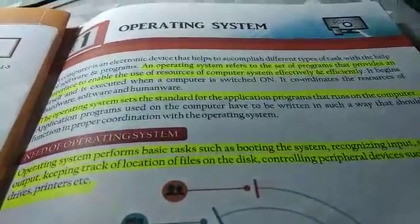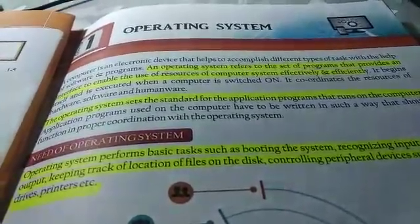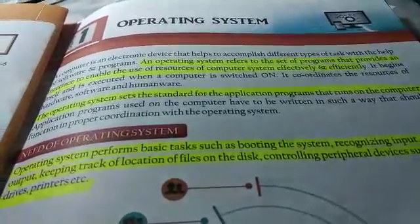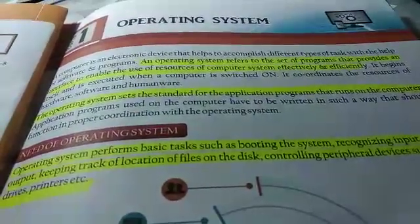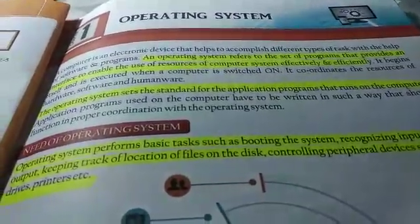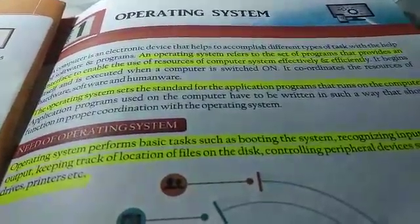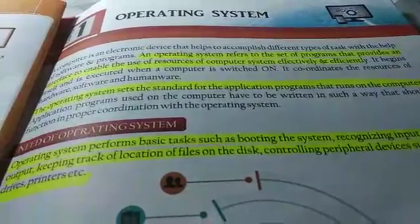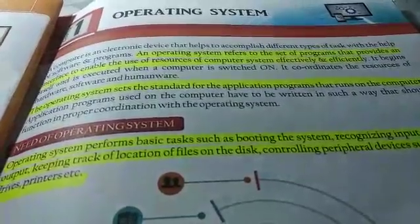Dear students, in your previous classes you must have studied that a computer is an electronic device like other devices which run on electricity. Then how is a computer different? How does it understand the instructions given to it? How does it perform those instructions? And how does it provide the output for the task given to it? This is all done by a special software known as Operating System.